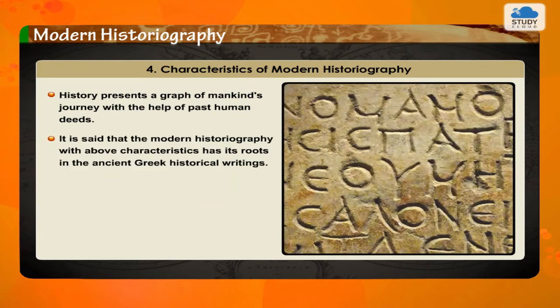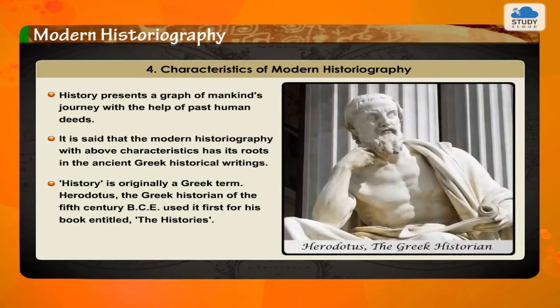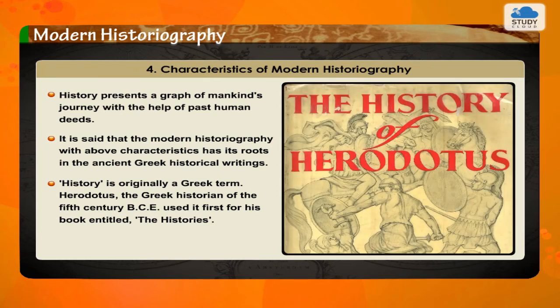It is said that modern historiography with the above characteristics has its roots in the ancient Greek historical writings. History is originally a Greek term. Herodotus, the Greek historian of the 5th century BCE, used it first for his book entitled The Histories.